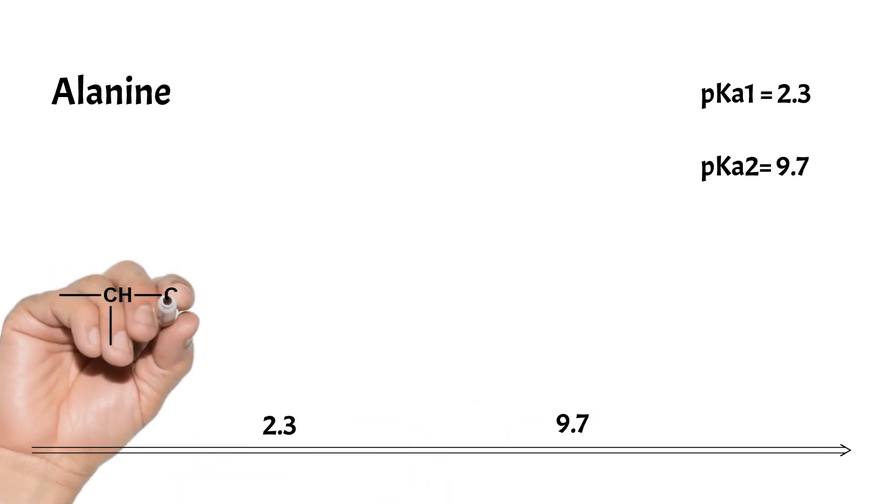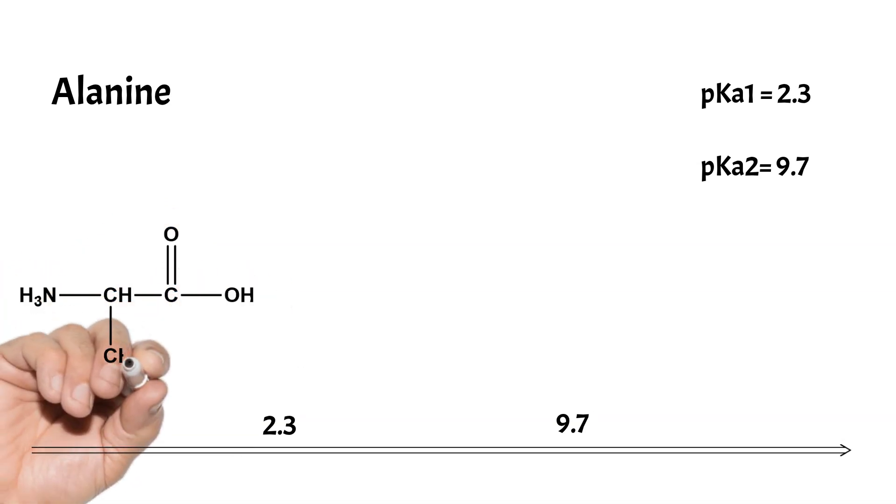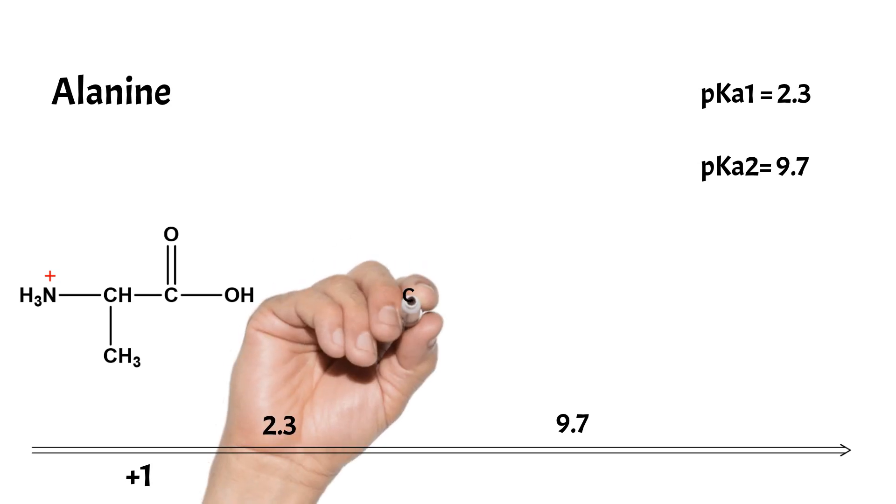Let's have a look at the relation between pK values and the charge of the amino acid, and understand how to calculate the pI value. Let's draw the pH line and place the pK values on it. At low pH, below pK1, all carboxylic and amino groups are protonated. The net charge for alanine is plus one.